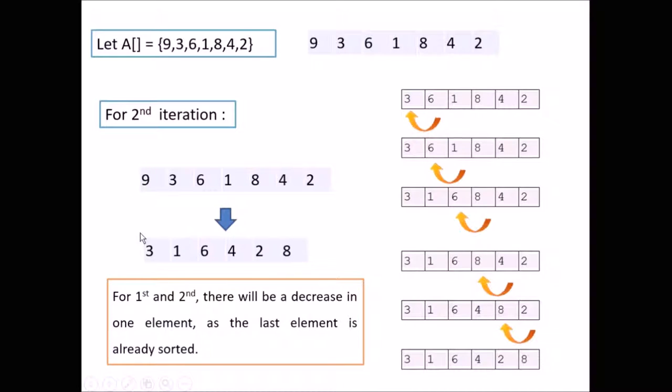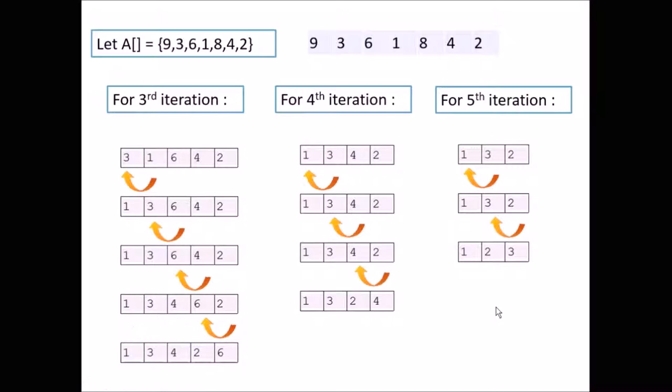So now we will take n-1 elements, that is 6 numbers for the second iteration. After second iteration we will get the second largest element towards the right end of the array. Here it is 8. So likewise we will get the largest element at that present array after every iteration.